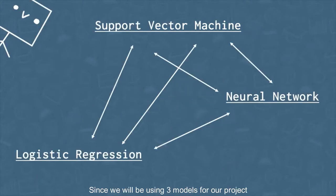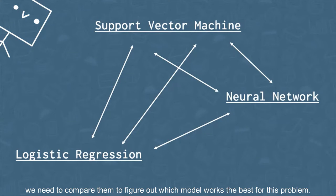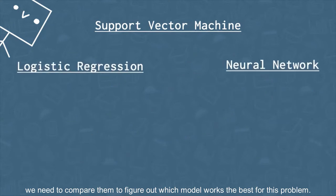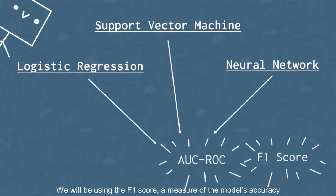Since we will be using three models for our project, we need to compare them to figure out which model works the best for this problem. We will be using the F1 score, a measure of the model's accuracy, and AUROC, an evaluation metric to determine how accurate each model is.